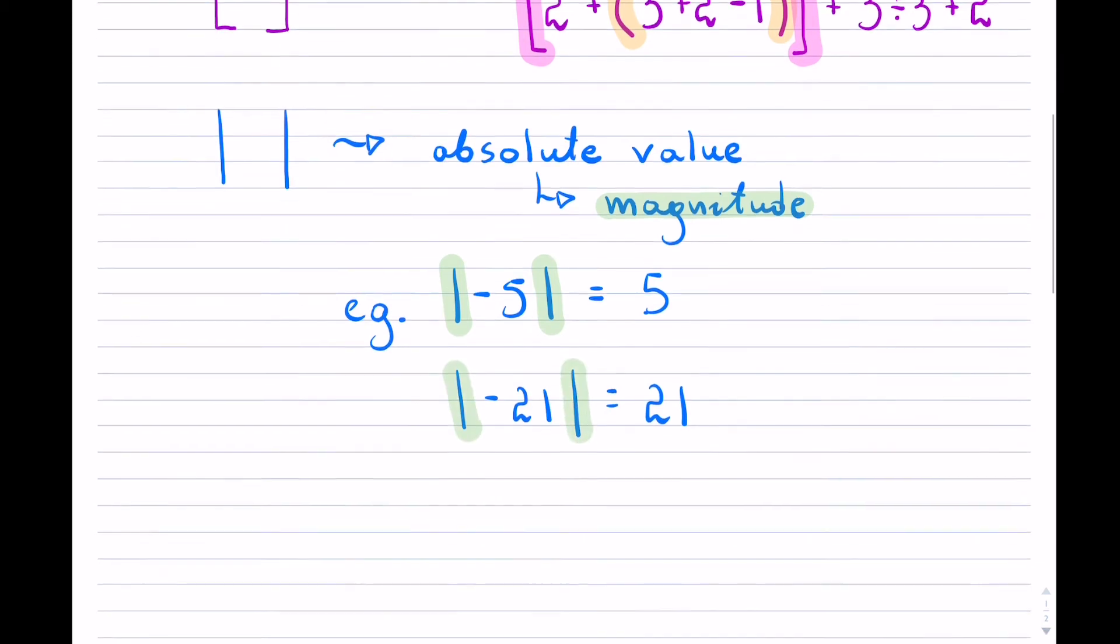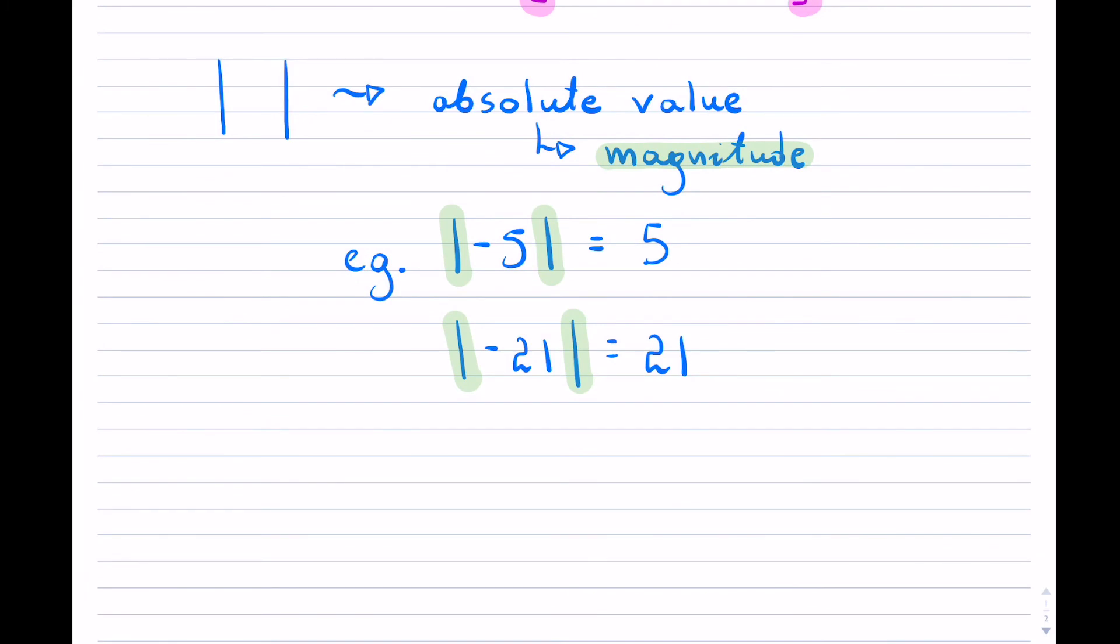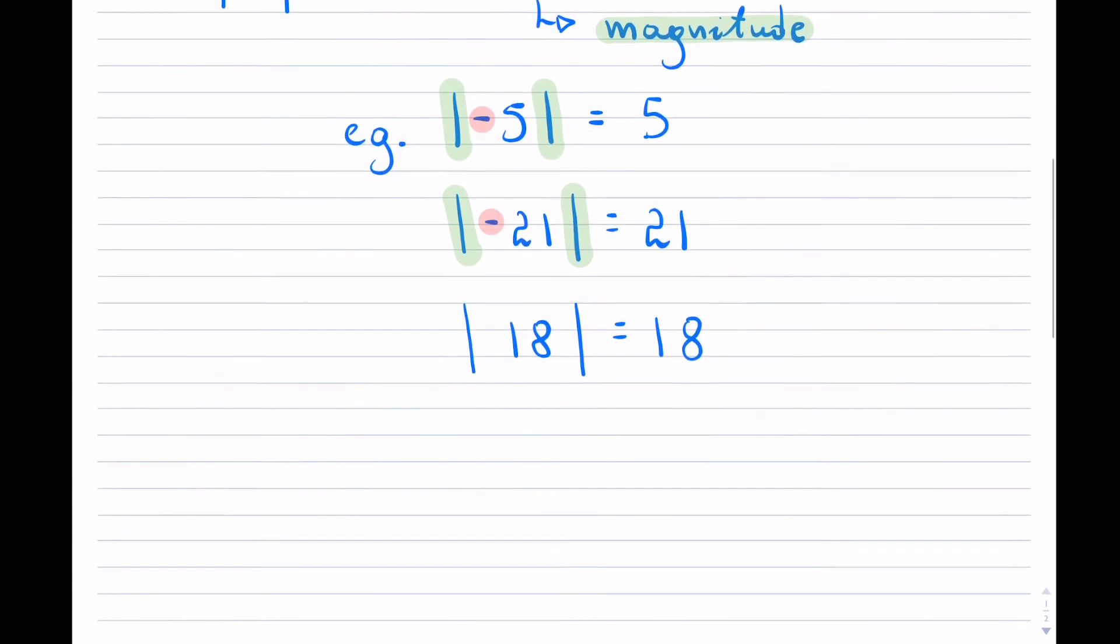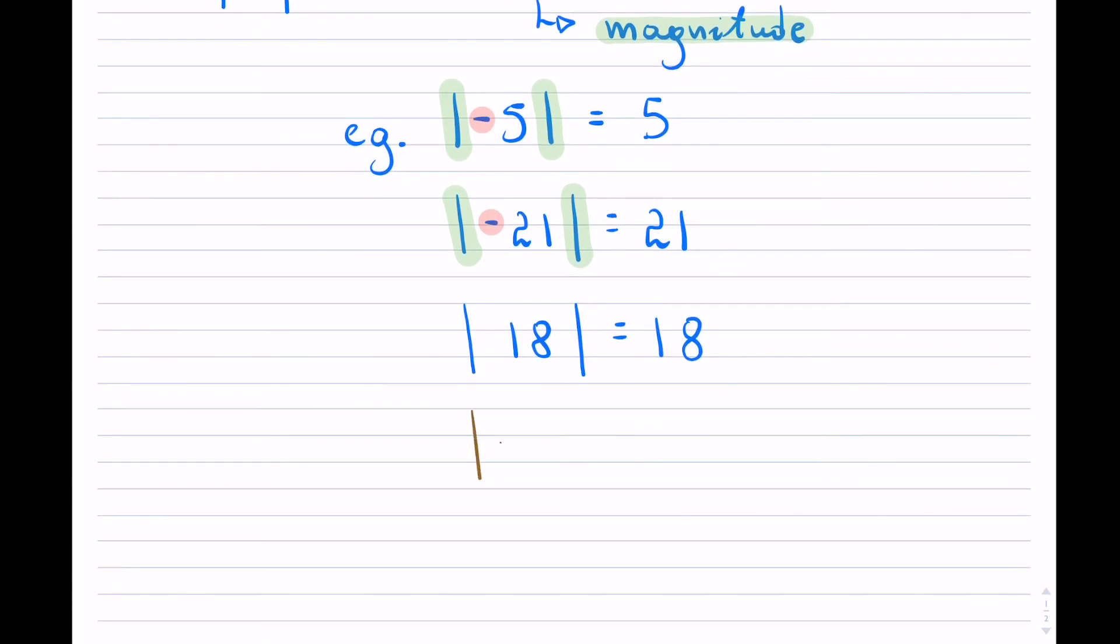Absolute values just take out the magnitude. If the number is actually positive inside, then it simply stays positive. So really, the only impact that you see is if your answer inside is negative, then it changes. You can use them even within expressions. For instance, you can have something like negative 2 plus 7 times 2 minus 20, and all of that is in absolute brackets.